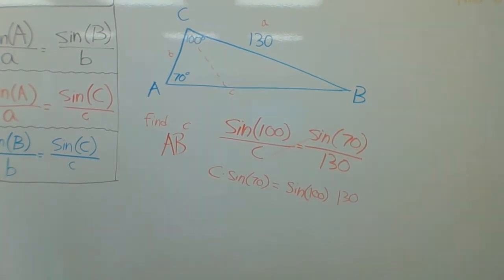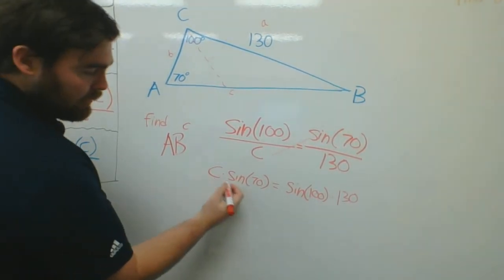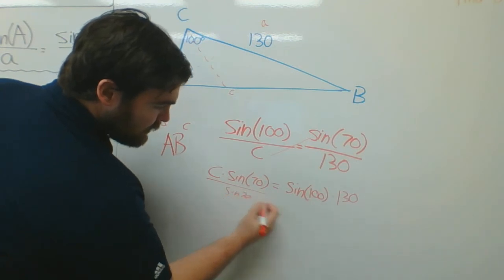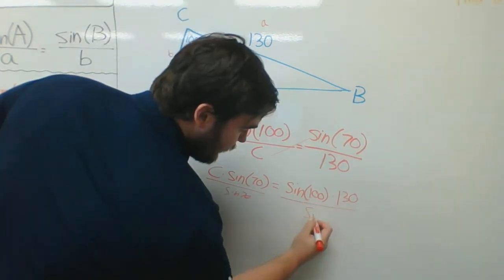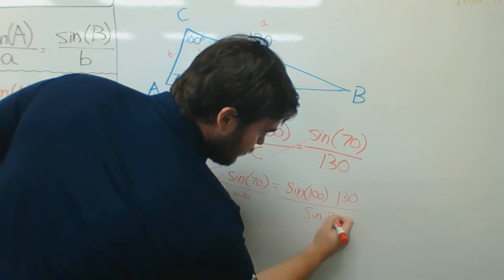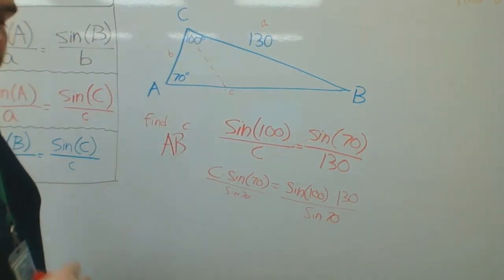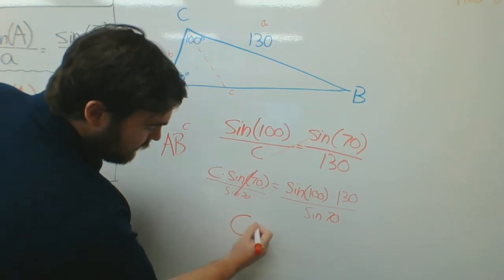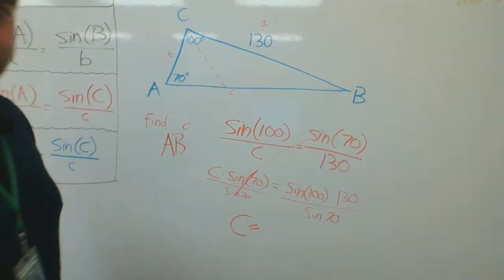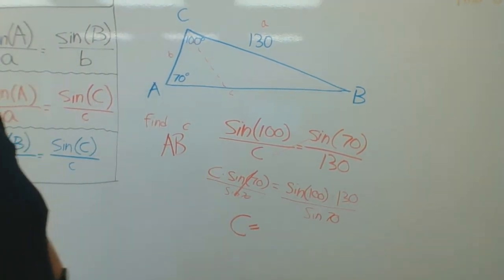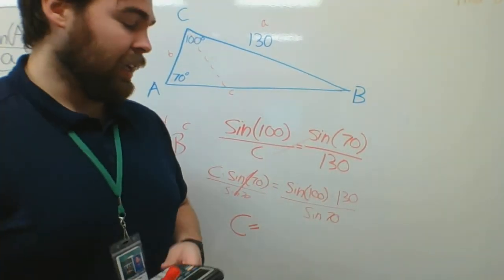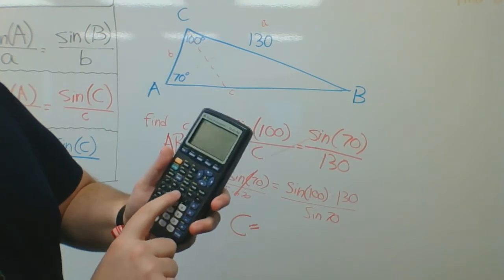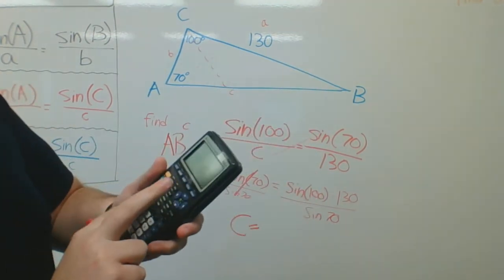So, from here, I know that I want to get c by itself. So I'll divide both sides by sine of 70. Sine of 70 divided by sine of 70. Nice thing is, when you do it like this, this cancels out. So I get c is equal, that's a lowercase c. I have my answer. I only have to plug it into the calculator one time.